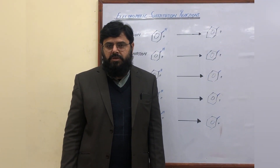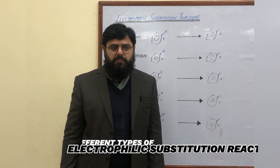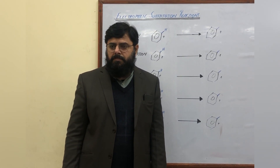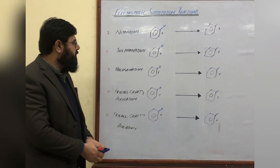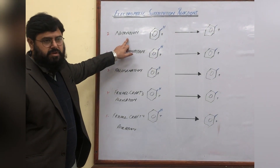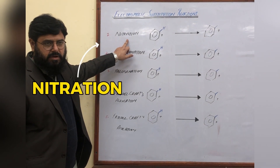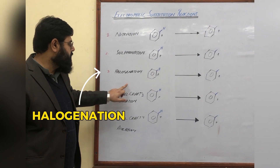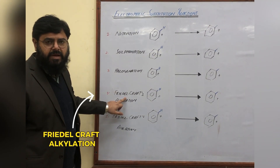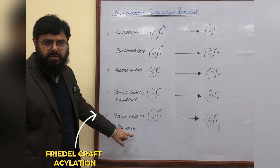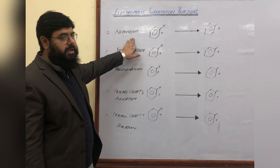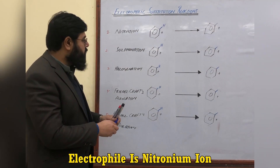In today's lecture we shall talk about different types of electrophilic substitution reactions and their mechanistic principles. There are five different types: the first one is nitration, second is sulfonation, third is halogenation, fourth is Friedel-Crafts alkylation, and the last one is Friedel-Crafts acylation. In the first reaction, the attacking electrophile is the nitronium ion.